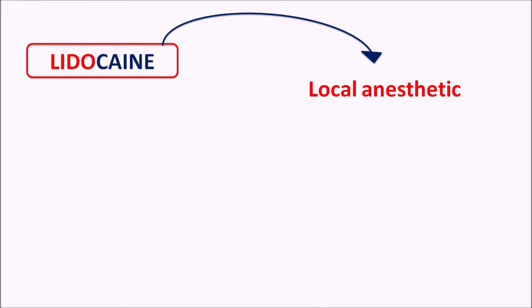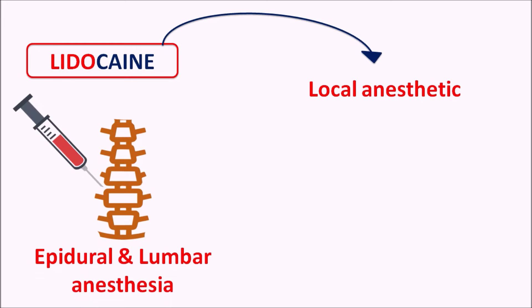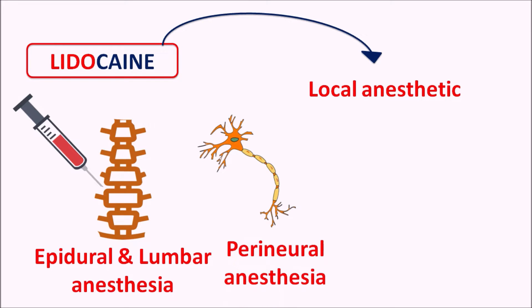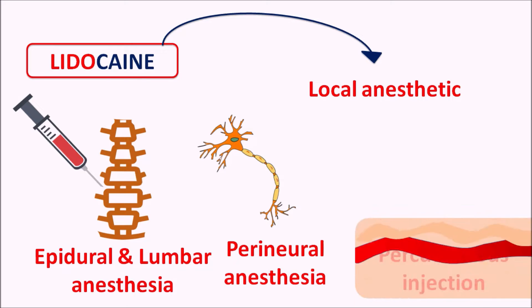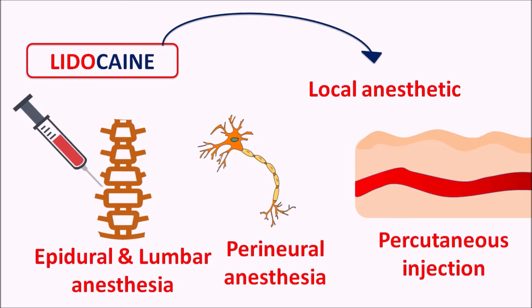Lidocaine as a local anesthetic can be given by injection to produce epidural as well as lumbar anesthesia. It can also be given as perineural anesthesia where a neuronal block is produced, and it can be given by percutaneous injection where it acts by infiltration to reduce sensitization and neuronal transmission. This drug can also be used to control nociception in patients with neuropathic pain. Apart from these clinical uses, this drug can also be topically applied on the mucous membrane as well as on the skin to produce local anesthesia.